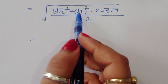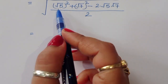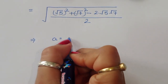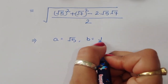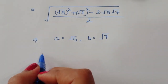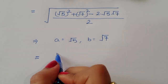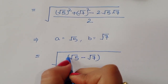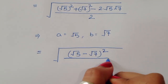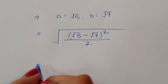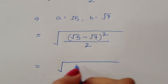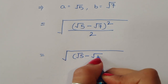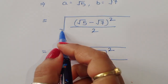This is now in the form a² + b² - 2ab, which equals (a - b)². Here a = √5 and b = √7. So we can write this as (√5 - √7)² divided by 2, which gives us √[(√5 - √7)² / 2].